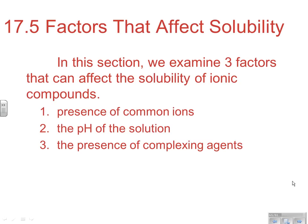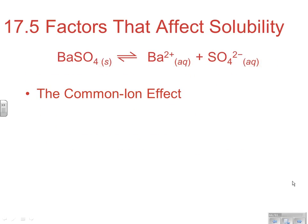One thing that can affect solubility is the presence of common ions. Another is the potential for pH to affect solubility. And finally, the presence of complexing agents — coordinate covalent complex ions. Metallic ions often form these with water, ammonia, and a number of other substances. We'll look at how forming complex ions can affect solubility from three different points of view.